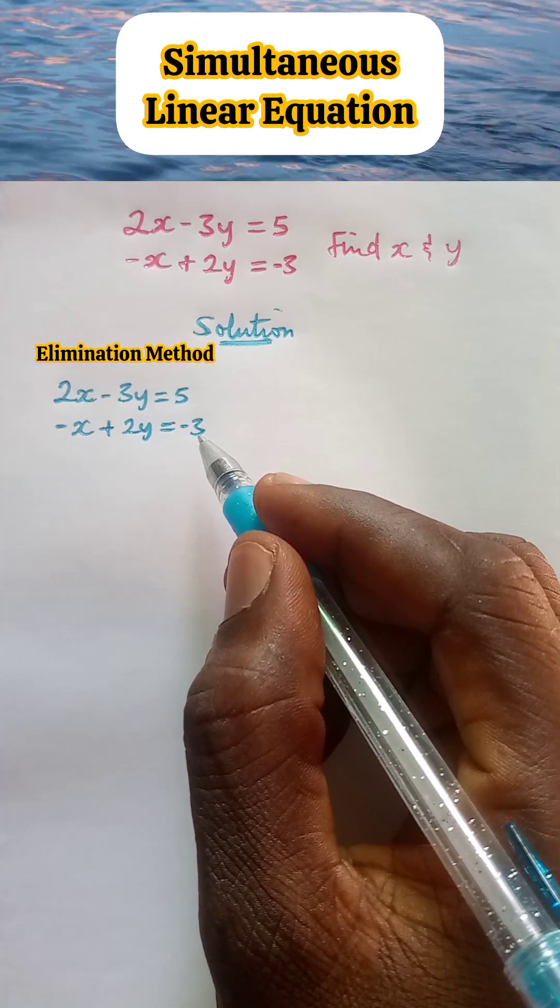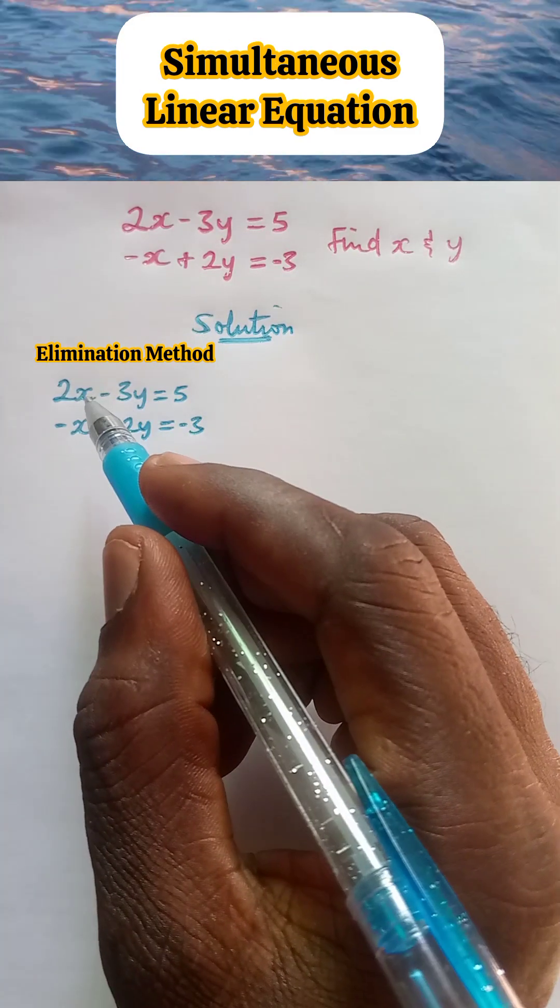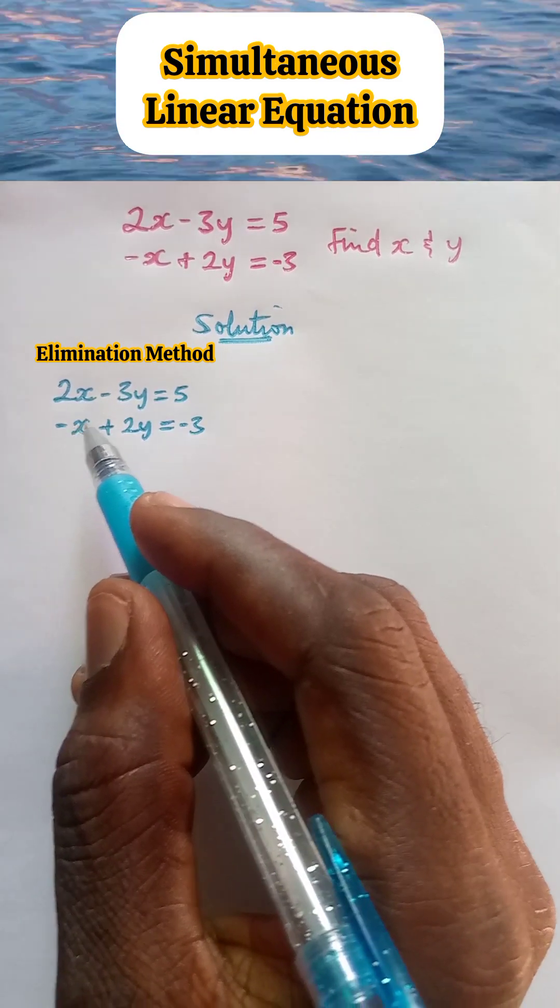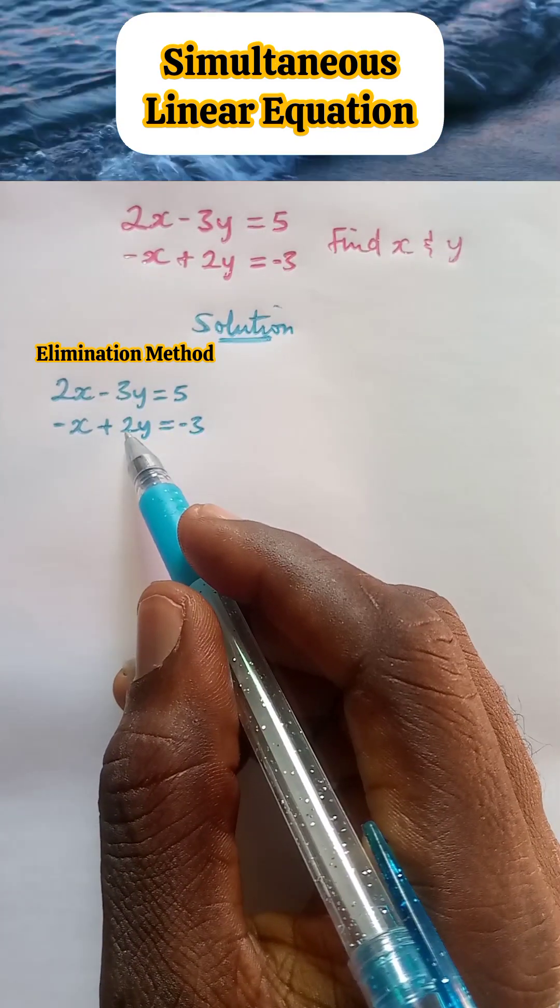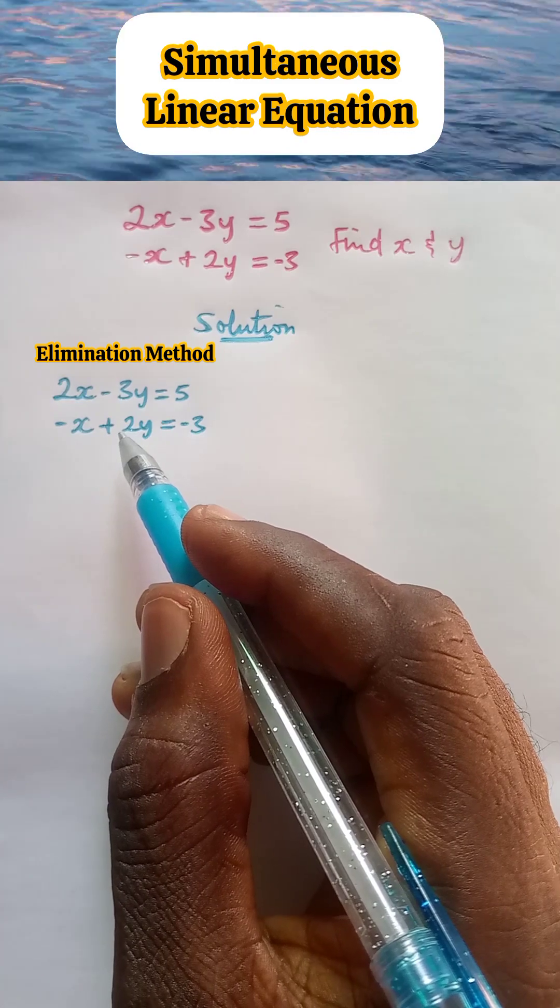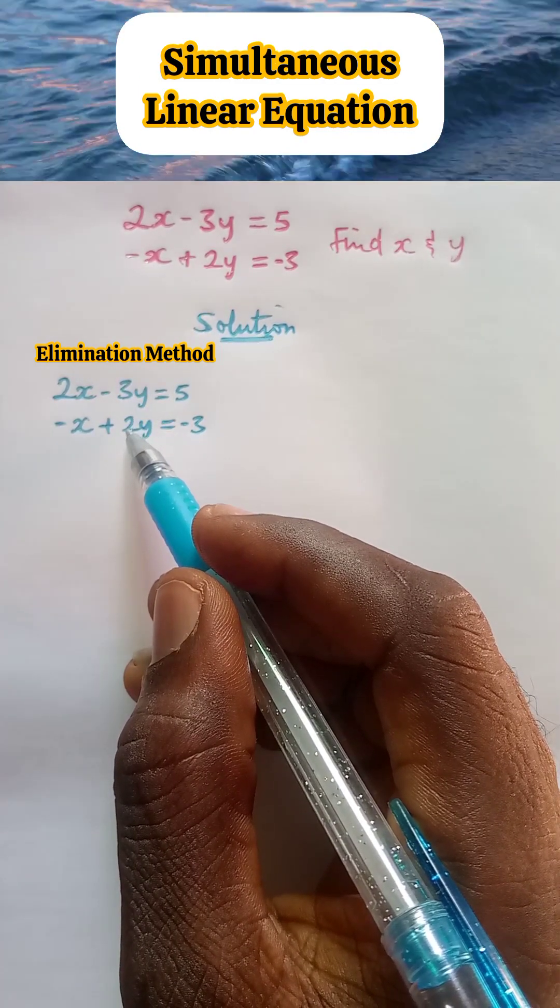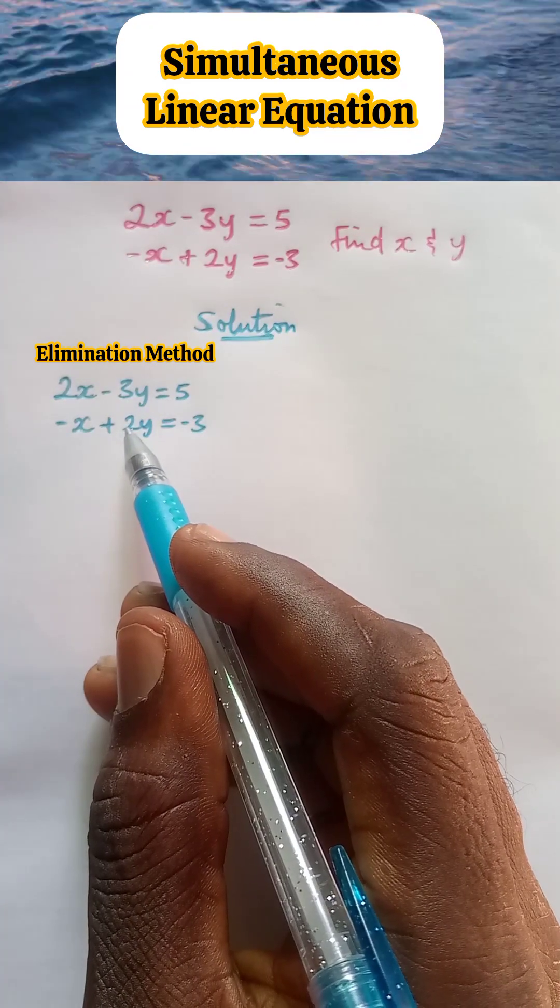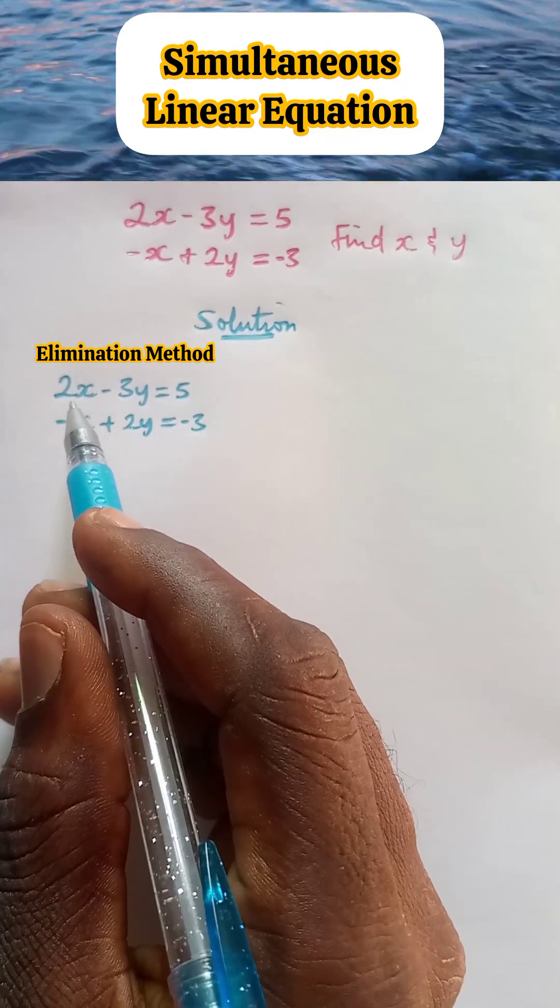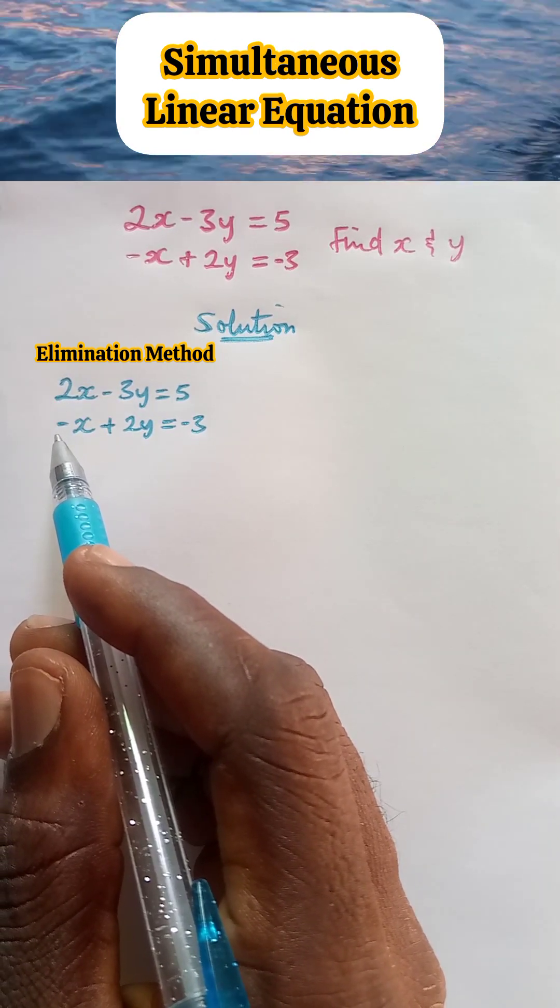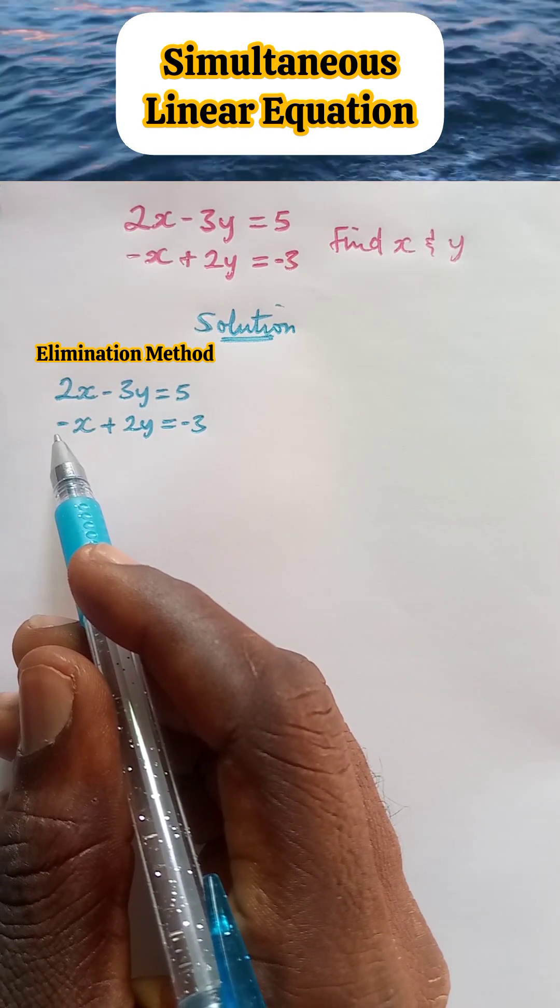The first thing we are going to do is to think of how to eliminate any of the unknown. We may choose to eliminate x or we may choose to eliminate y. Whichever one we choose to eliminate, we think of how to make the coefficient to be equal. If we are to eliminate y, for example, we equate the coefficient of y. And if we are to eliminate x, we equate the coefficient of both x. Here, let us eliminate x so that we can solve for y.